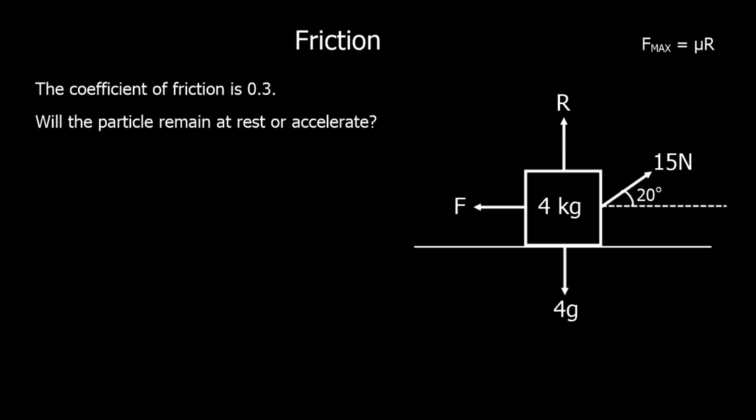The coefficient of friction is 0.3. Will the particle remain at rest or accelerate? This time we've got a force diagonally, so we need to split it up into its components. The horizontal component is 15 cos 20, and the vertical component is 15 sin 20.